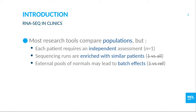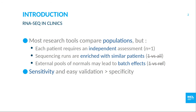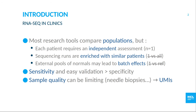We also want to avoid using external pools of normals because it could lead to batch effects. Another specificity of this context is that we are more interested in sensitivity than specificity, because every finding is validated by a biologist. Sample quality can also be a problem, especially in oncology where we can have very small samples with high duplication rates, so we use UMIs — unique molecular indexes.